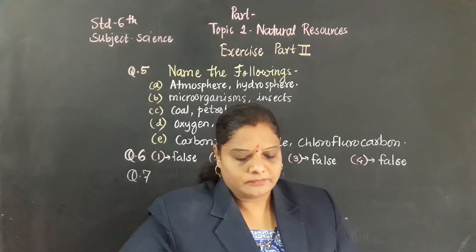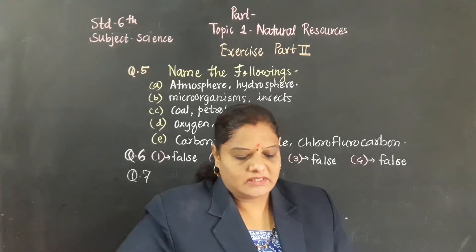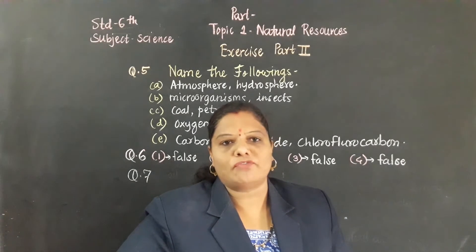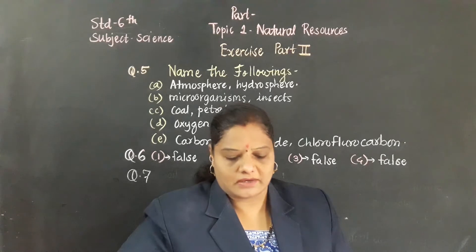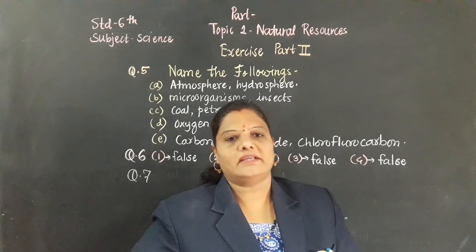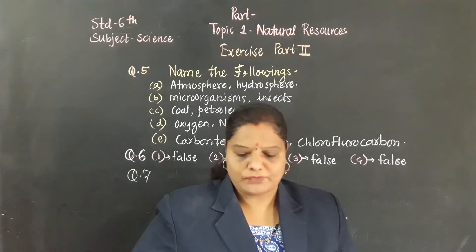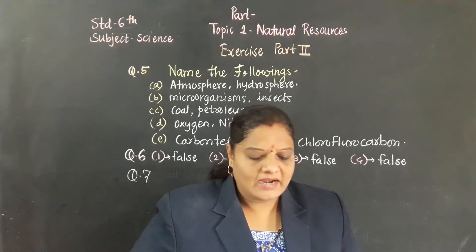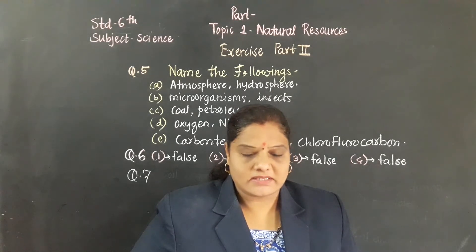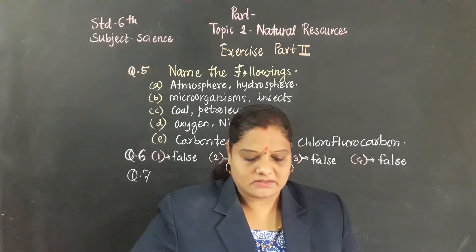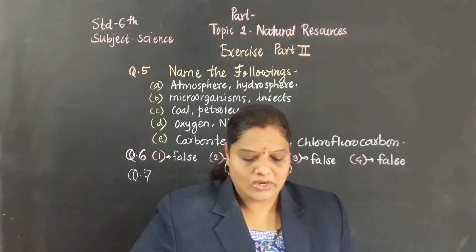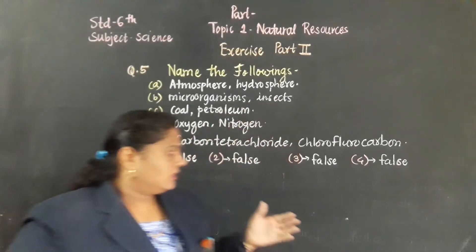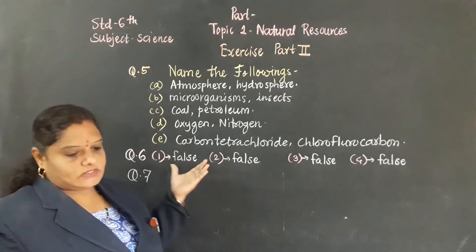Understood? Now in the sixth question, true or false are given. Identify whether the given sentence is true or false. First, A: Land and soil are the same things. This sentence is false.